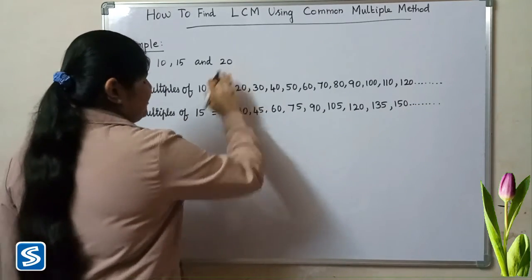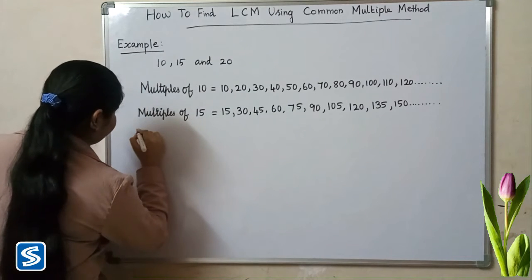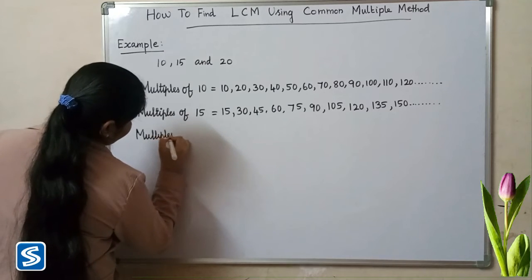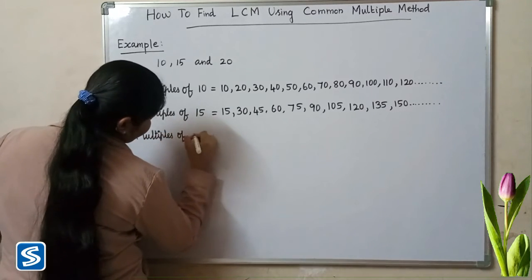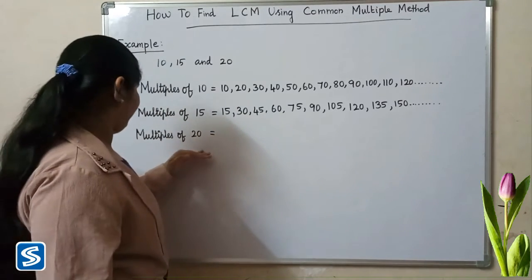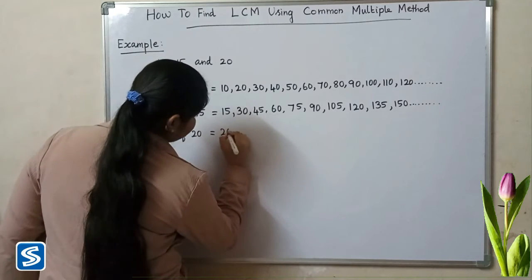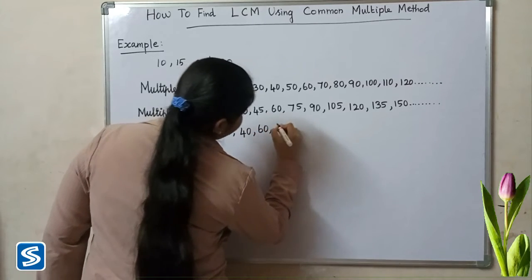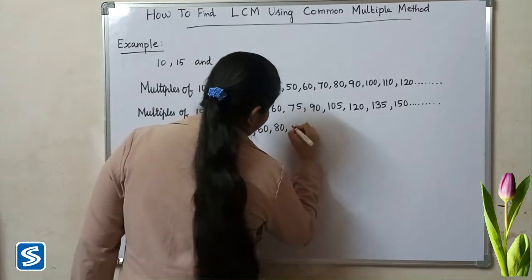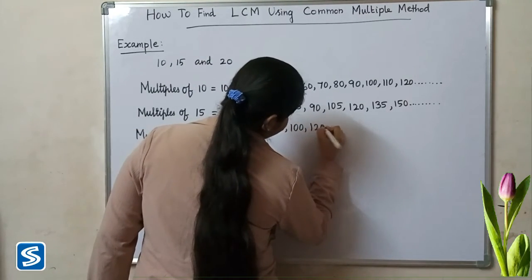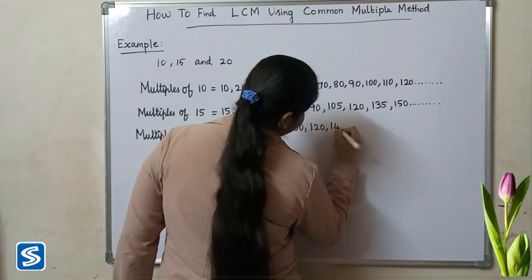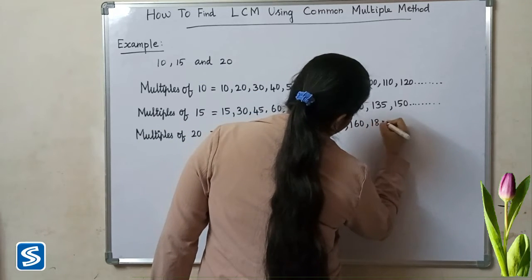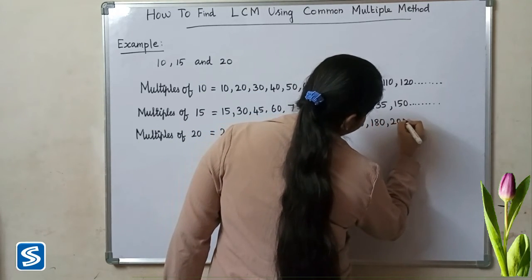Next we have to find the multiples of 20. Multiples of 20 are: 20 ones are 20, 20 twos are 40, 20 threes are 60, 20 fours are 80, 20 fives are 100, 120, 140, 160, 180, 200, and so on.